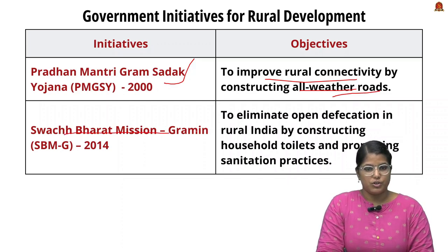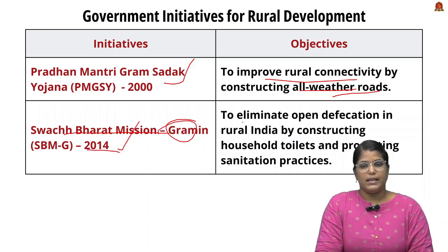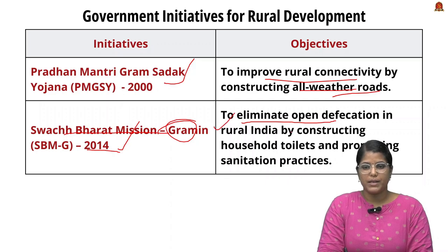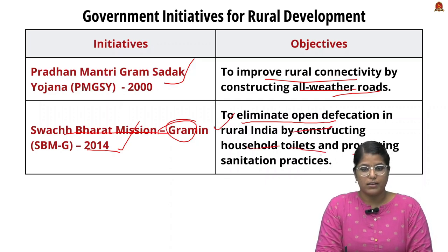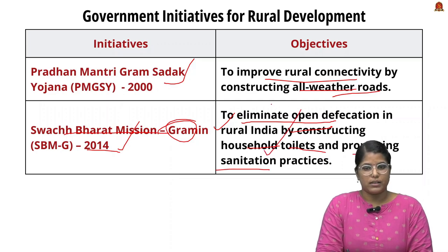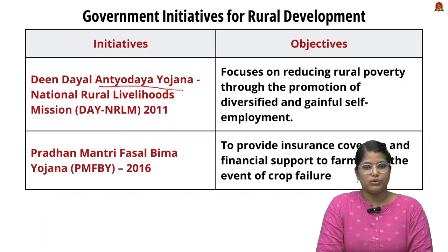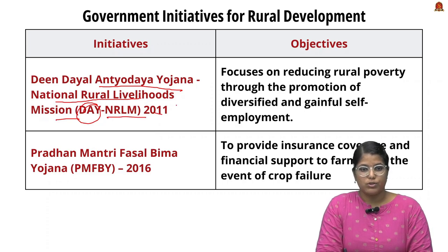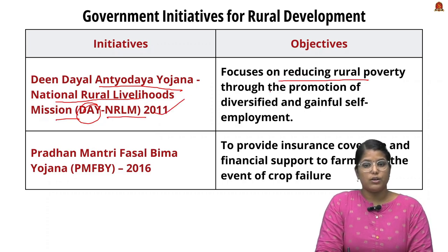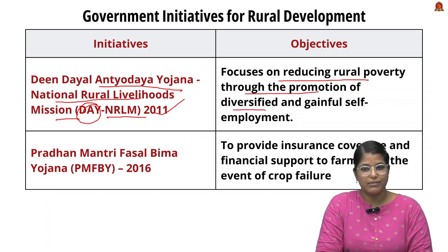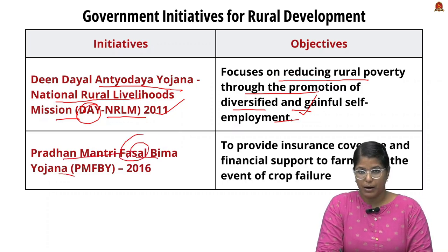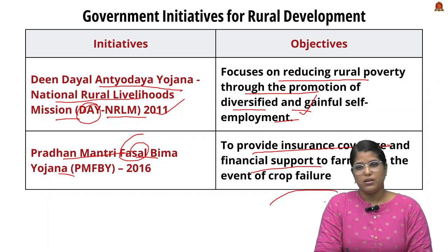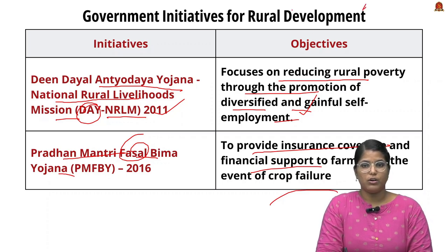Fourth, Swachh Bharat Mission Gramin, launched in 2014, aims to eliminate open defecation in rural India by constructing household toilets and promoting sanitation practices — a very successful project. Fifth, Deendayal Antyodaya Yojana or National Rural Livelihood Mission (DAY-NRLM), launched in 2011, focuses on reducing rural poverty through diversification and self-employment. Finally, Pradhan Mantri Fasal Bima Yojana provides insurance coverage and financial support to farmers in the event of crop failure.